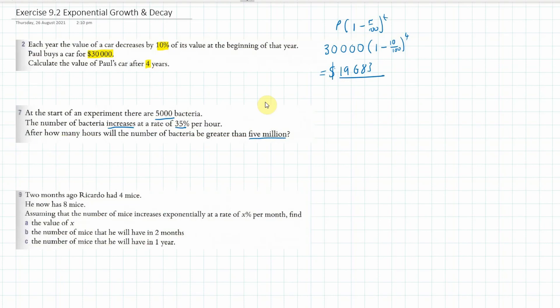Okay so what we want to do here is we want to set our answer as five million and that's going to equal our initial amount of bacteria, the P, times the rate of increase which is 1 plus 35 over 100, and then T is our unknown. So that's what we've got to do first.